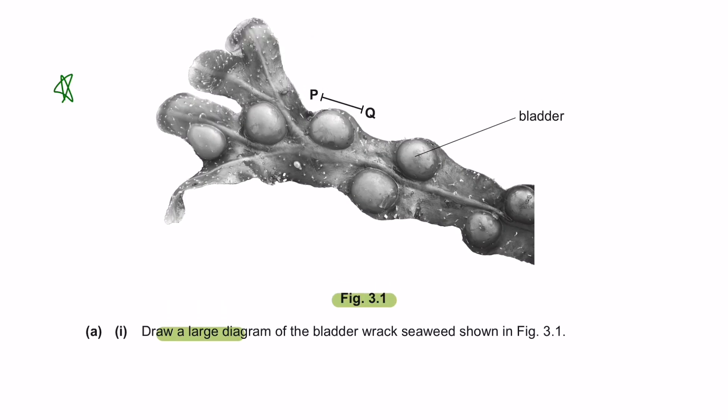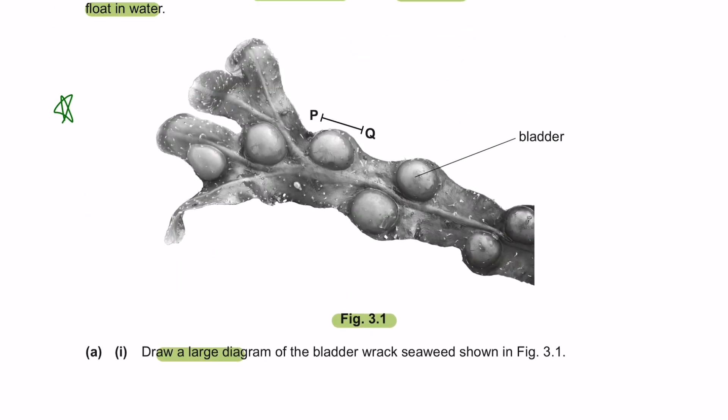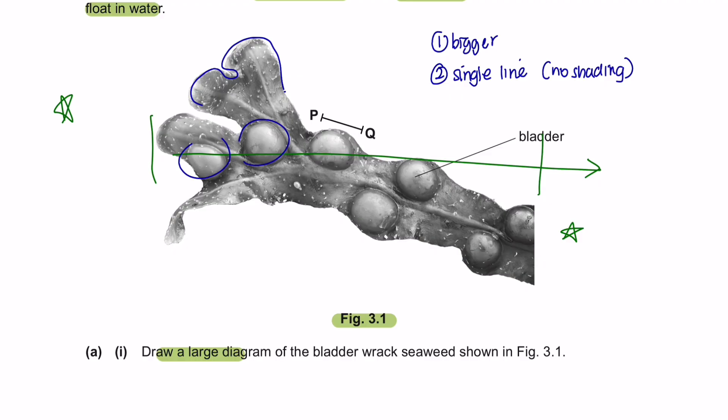This type of question is always asked in your paper 6 biology. You're given a very large space to draw your diagram over here and 4 marks for this. So your drawing should generally be bigger than the diagram that is being given over here. Use your pencil and outline this only in single line and make sure there is no shading. Make sure to include all the details that you see in the diagram. Over here, you can see that there are also lines that is branching in. So make sure to include that as well.